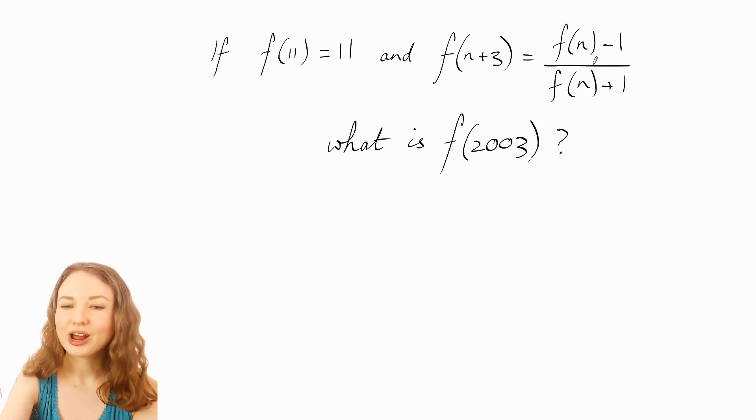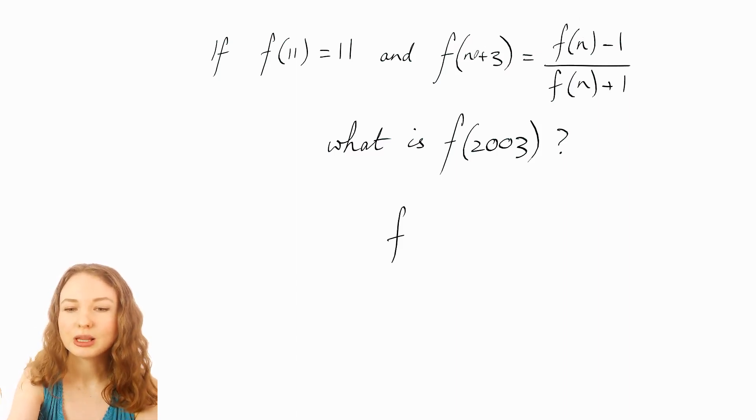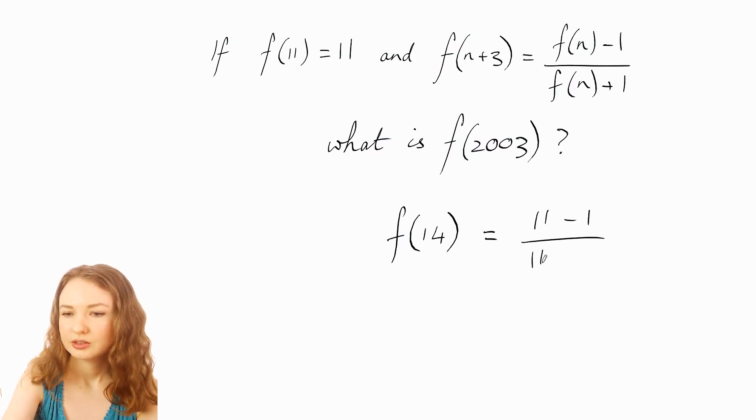So what I would do is just try out using this formula with n equals 11 because we know what f of 11 is. So if we plug in 11 in there we will get f of 14. So f of 11 is 11. So just applying that formula we get 10 over 12 and you can simplify that and turn it into 5 over 6.